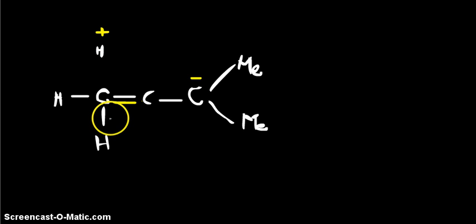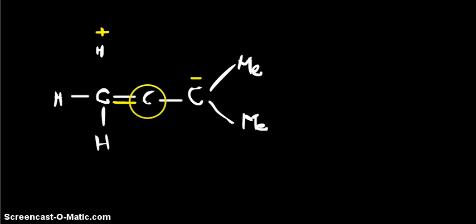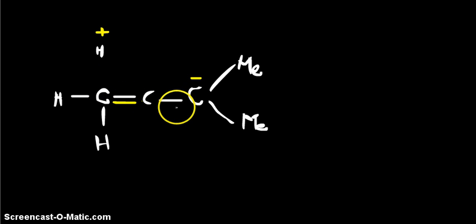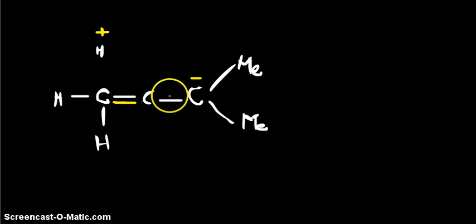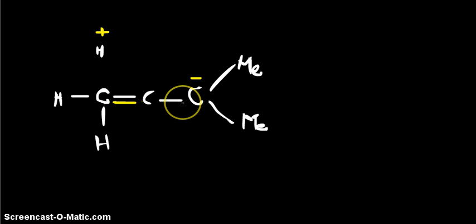So this is the final structure. You can see that the bond has shifted from this CH to this part and formed a double bond. And this double bond which is over there shifted to the next carbon and gave it a negative charge. So this whole process is called hyperconjugation.